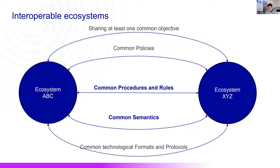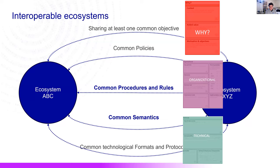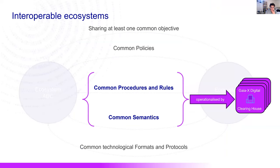You have a big topic on the organization part. For what concerns GAIA-X, the procedures, rules, and common semantics — we seek to automate them as much as possible. We operationalize those common processes and rules and this common semantics by a set of microservices that we call the GAIA-X digital clearinghouse. Some of the slides are a bit technical, but I would like more to explain why we are doing that and how we end up with that solution. The GAIA-X digital clearinghouse is the enabler for two ecosystems to start comparing procedures, rules, and common semantics, and aligning to have this interoperability.